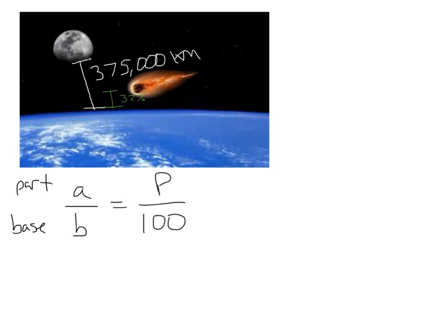What is the part and what is the base? Well, actually we don't know the part. The part's going to be usually smaller than the base. And the base, in this case, is going to be this full distance. This is the full distance of 375,000.